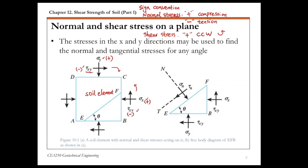Now let's look at a particular plane EF. With the sign convention established, we want to determine the shear and normal stress on this plane EF, which is at an angle theta from the horizontal axis. The right-hand side shows a free body diagram of this EF plane. Our goal is to find sigma n, the normal stress, and tau n, the shear stress on this plane, using simple equilibrium — summing all forces in the x direction equal to zero.